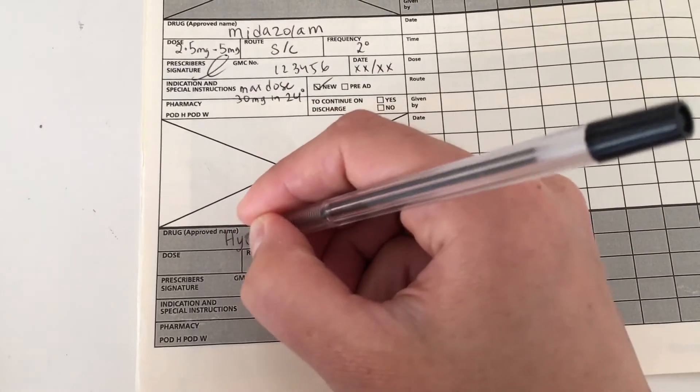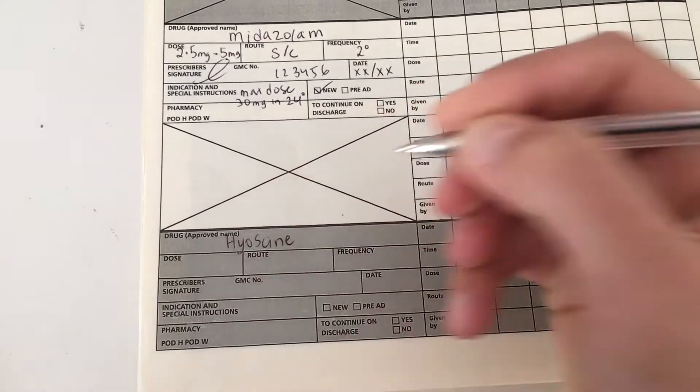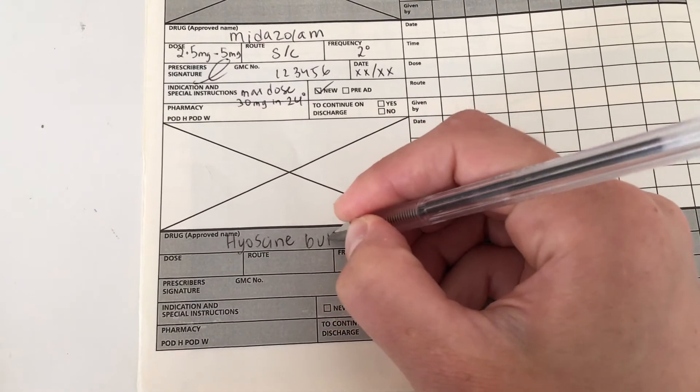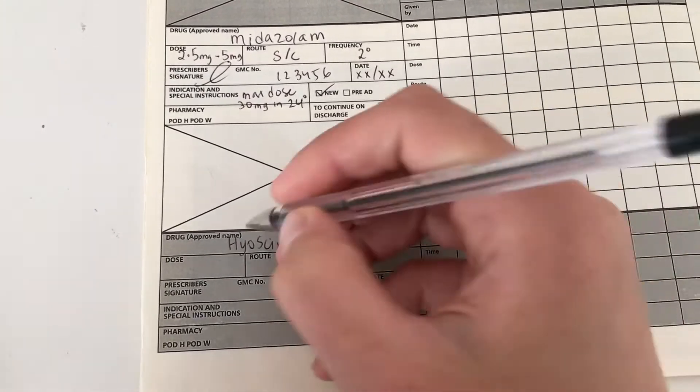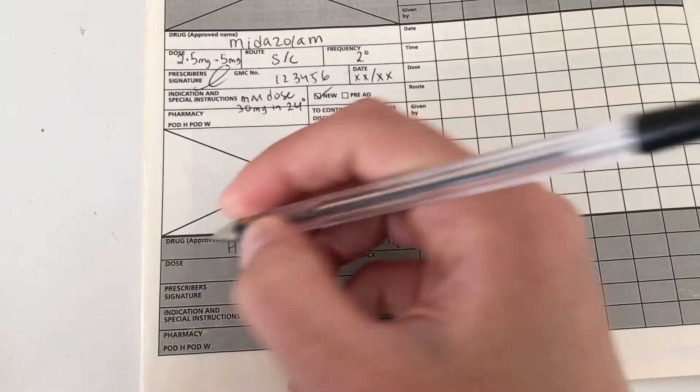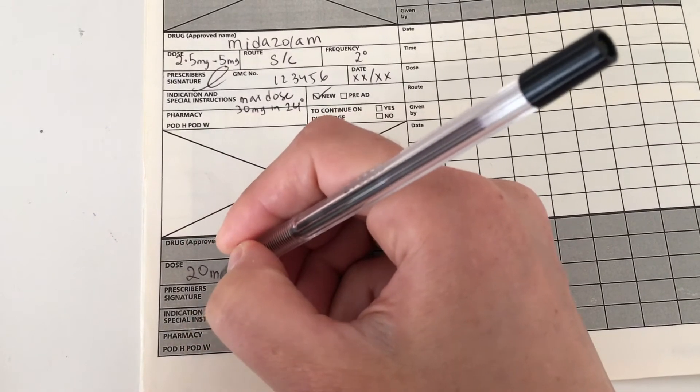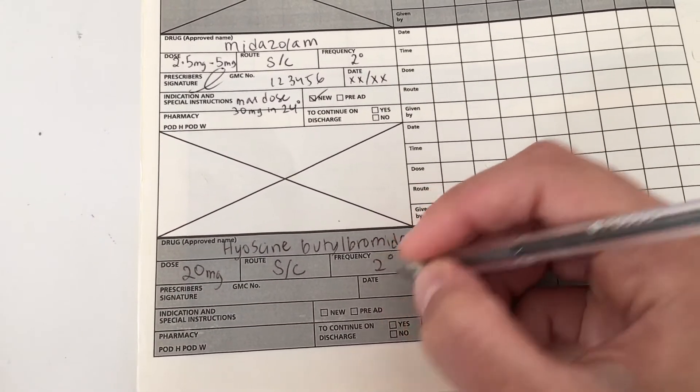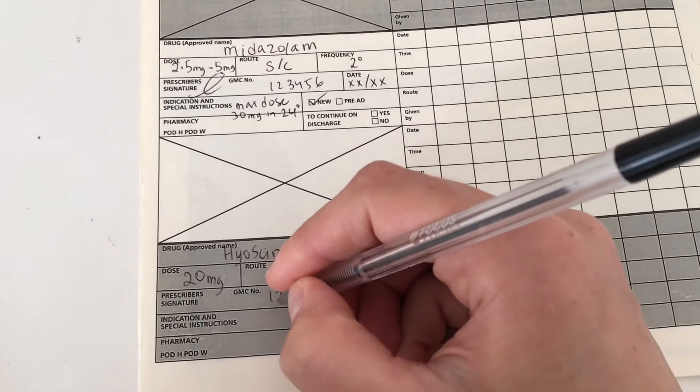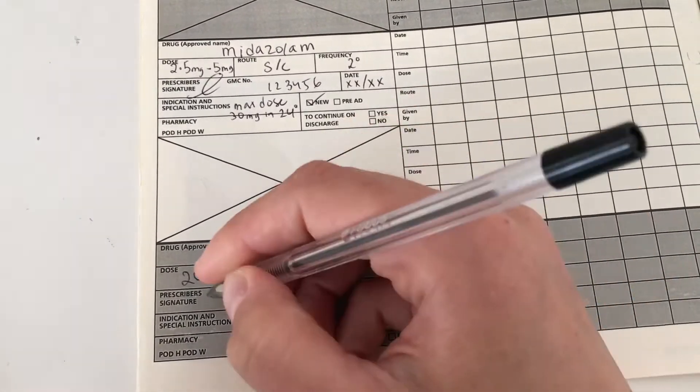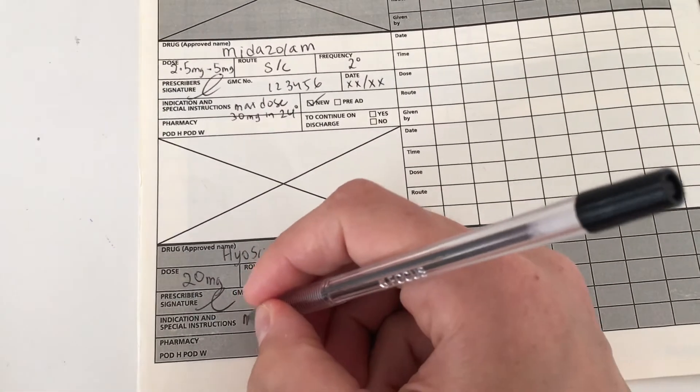And finally the fourth common medication that's prescribed for end of life is hyoscine butylbromide. Now this helps to reduce secretions for patients who struggle with their breathing. As you can see they're all subcut. The dose is 20 milligrams and you can give this two hourly. The date, sign, GMC number, new medication and put the maximum dose which in this case is 120 milligrams in 24 hours.